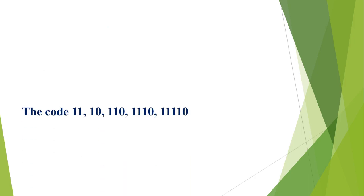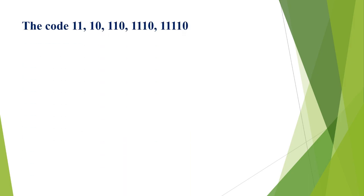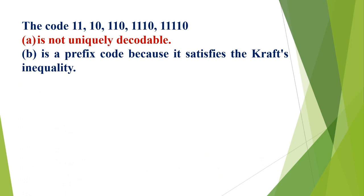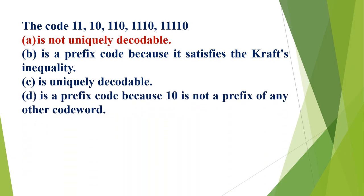Huffman coding technique is adopted for constructing the source code with blank redundancy: A) maximum, B) constant, C) minimum, D) unpredictable. The correct option is C, minimum. The code 1 1 1 1 0 | 1 1 1 0 | 1 1 1 1 1 0: A) is not uniquely decodable, B) is a prefix code because it satisfies the Kraft inequality, C) is not uniquely decodable, D) is a prefix code because 10 is not a prefix of any other codeword. The correct option is A, not uniquely decodable.